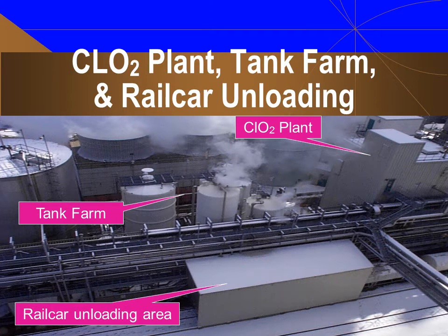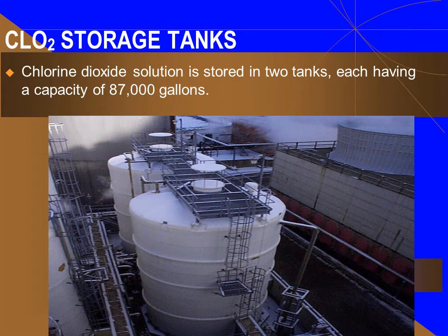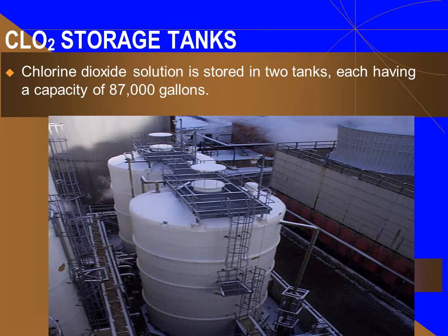This slide shows the chlorine dioxide plant, the storage tank farm that provides storage and containment for the chemicals involved with manufacturing chlorine dioxide, and the railcar unloading area. Chlorine dioxide solution is stored in two tanks, each having a capacity of 87,000 gallons. Both tanks and the other chemical products received and used to make chlorine dioxide are stored in a containment area for spill control.